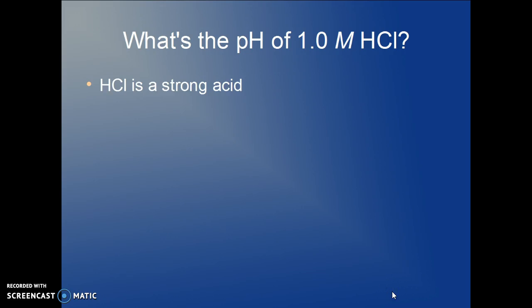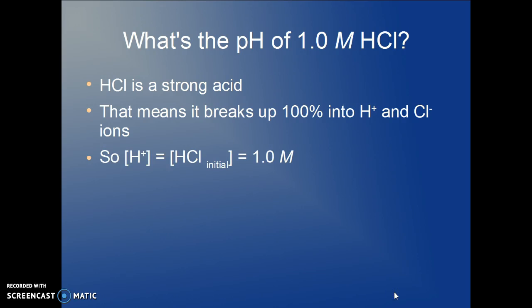So what's the pH of a 1.0 molar hydrochloric acid solution? Hydrochloric acid is a strong acid. That means it breaks up a hundred percent into hydrogen ions and chloride ions. Therefore, the hydrogen ion concentration is the same as the initial concentration of the hydrochloric acid, 1.0 molar.